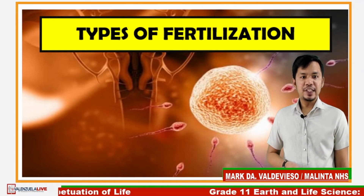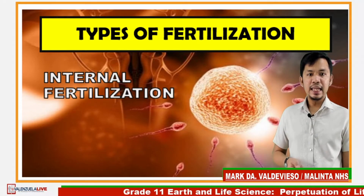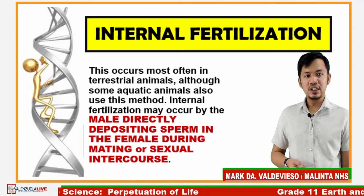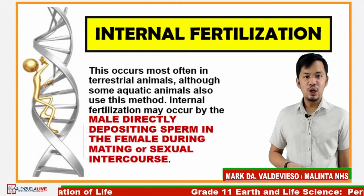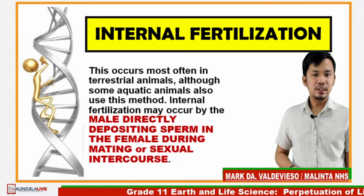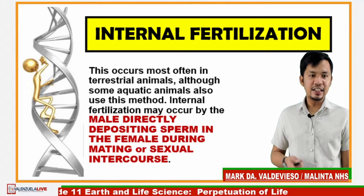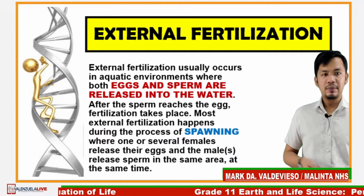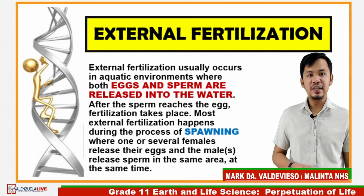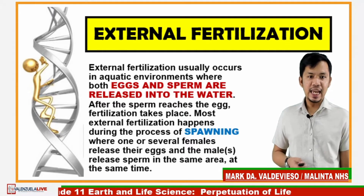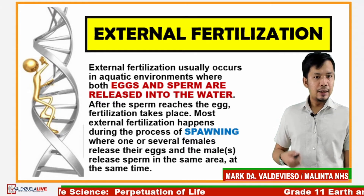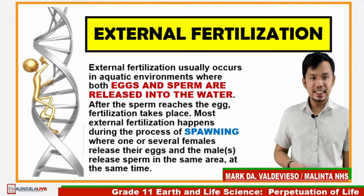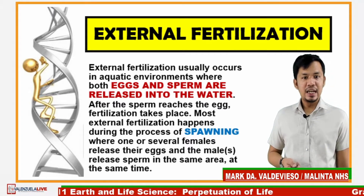We have two types of fertilization: internal fertilization and external fertilization. Internal fertilization usually occurs most often in terrestrial animals, although sub-aquatic animals also use this method. It may occur by the male directly depositing sperm in the female during mating or sexual intercourse. External fertilization usually occurs in aquatic environments where both egg and sperm are released into the water. Most external fertilization happens during spawning, wherein one or several females release their eggs and males release their sperm in the same area at the same time.